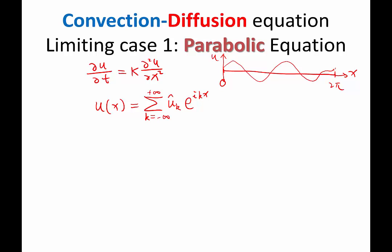And e to the i kx, what does it look like? E to the i kx looks like a cosine of kx plus an imaginary part of sine kx. So this u hat of k is a complex number that has imaginary and real parts. And if the u hat of k is exactly the conjugate of u hat of minus k, then the imaginary parts cancel and you have perfect sines and cosines added up together to form a solution u as a function of x.